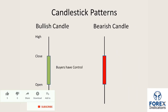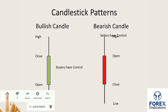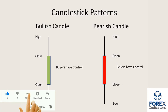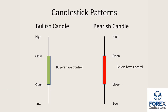Conversely, a bearish candle in this case is coloured red. The candle has an open, a high, a low and a close. During the formation of this candle it opened at a certain level and closed at a lower price than the opening level. This again suggests to us that sellers have control at the formation of that candle.